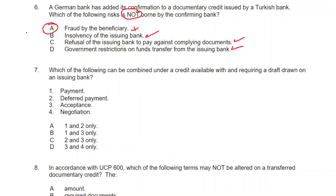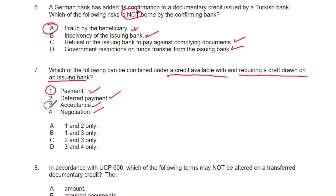Question 7: Which of the following can be combined under a credit available with a draft drawn on an issuing bank — payment, deferred payment, acceptance, or negotiation? When a draft is involved, the two options that can be combined are acceptance and payment. The correct answer is B — 1 and 3 only.